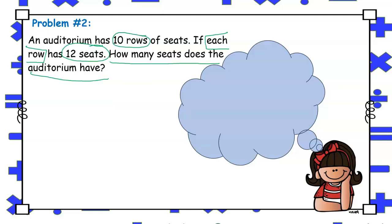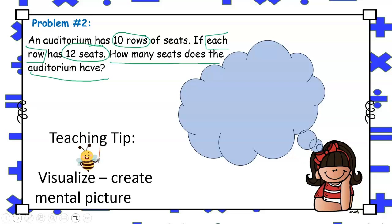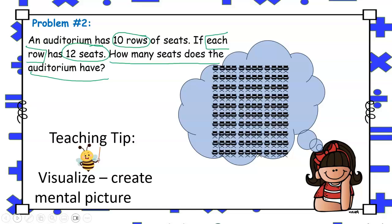Now let's examine the problem more carefully to see if multiplication is the operation needed to solve for this word problem. Again, it states 10 rows with 12 seats in each row. Notice that the signal word each is present and that implies that something is being evenly grouped even though it is not directly stated. And students who struggle to recognize that could benefit from creating a mental picture. Since it states that there are 10 rows with 12 seats in each row, it could look something like this.